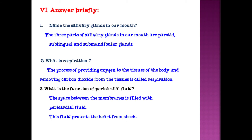Now we will see brief answer questions. First question: Name the salivary glands in our mouth. The three salivary glands in our mouth are parotid, sublingual and submandibular glands. Second question: What is respiration? The process of providing oxygen to the tissues of the body and removing carbon dioxide from the tissues is called respiration.